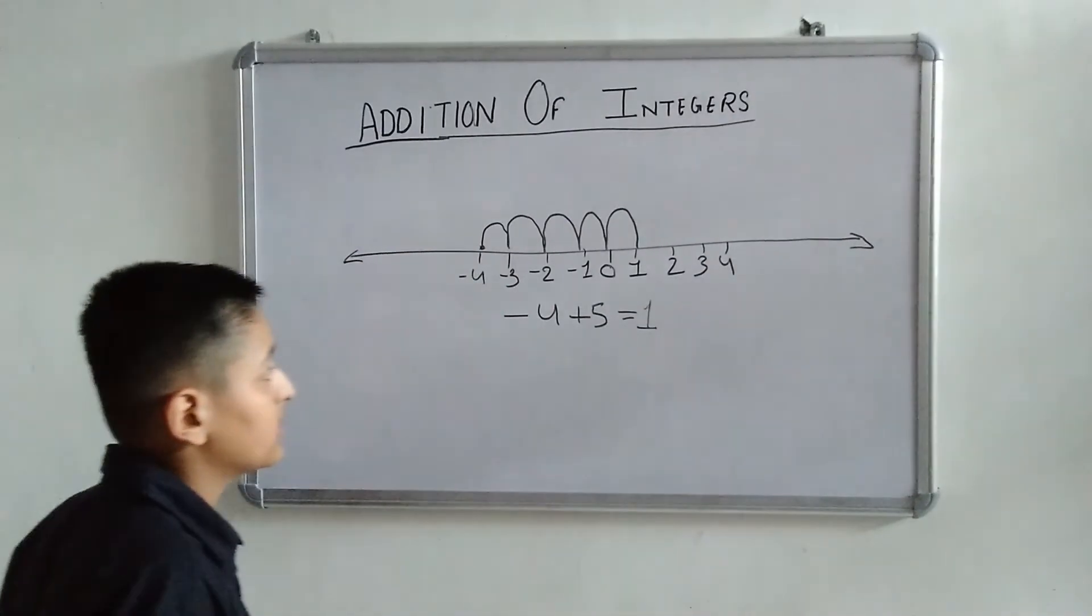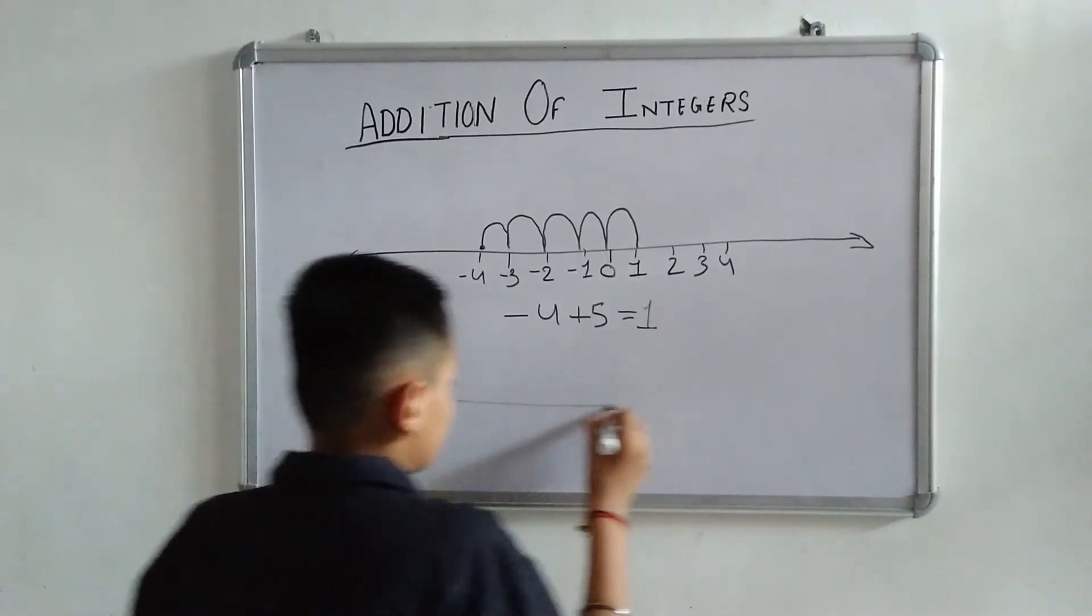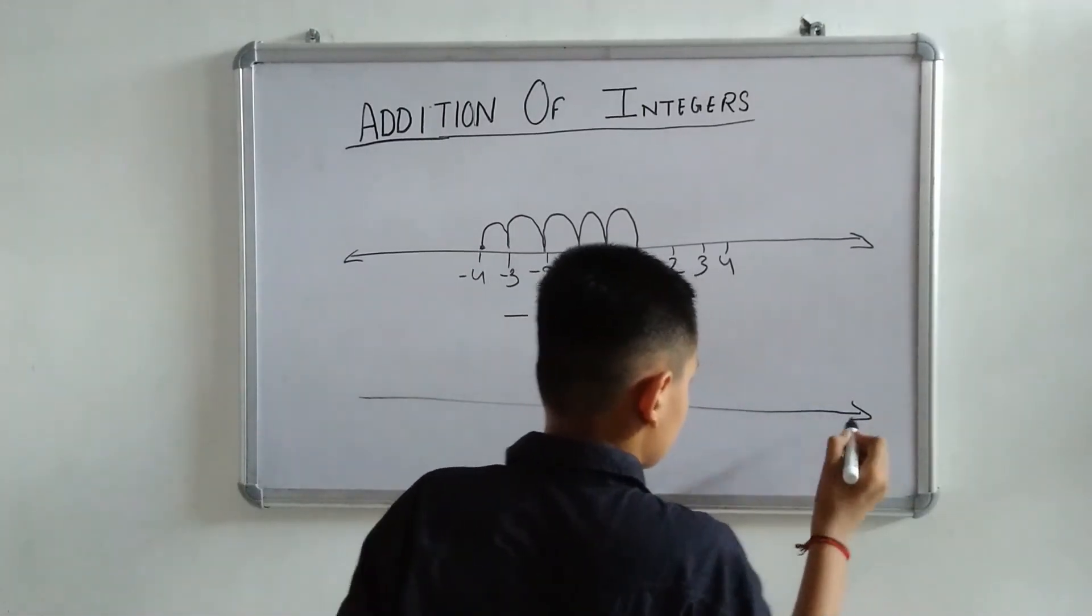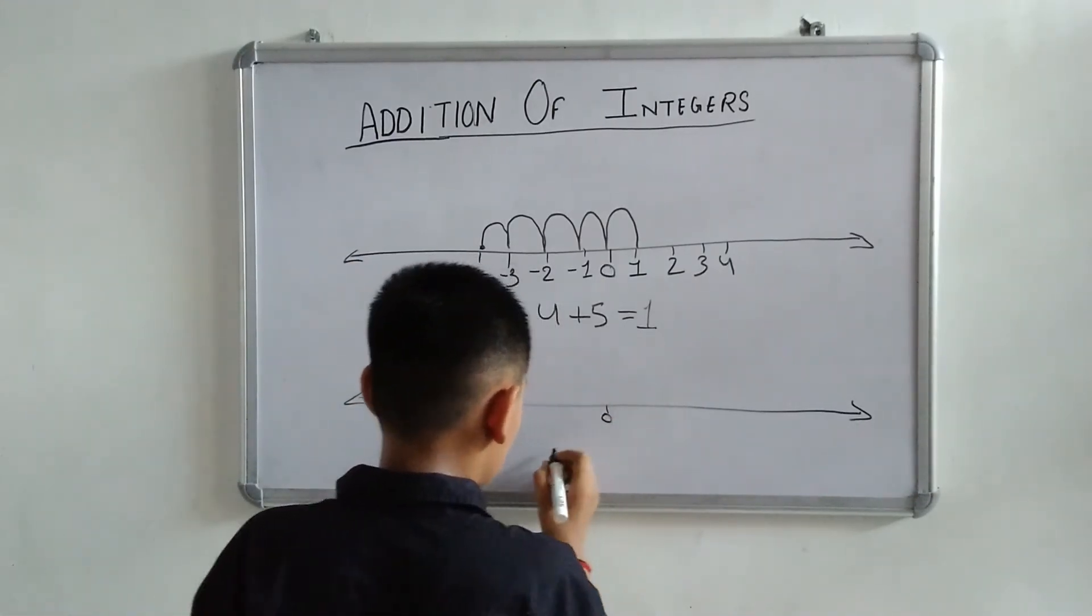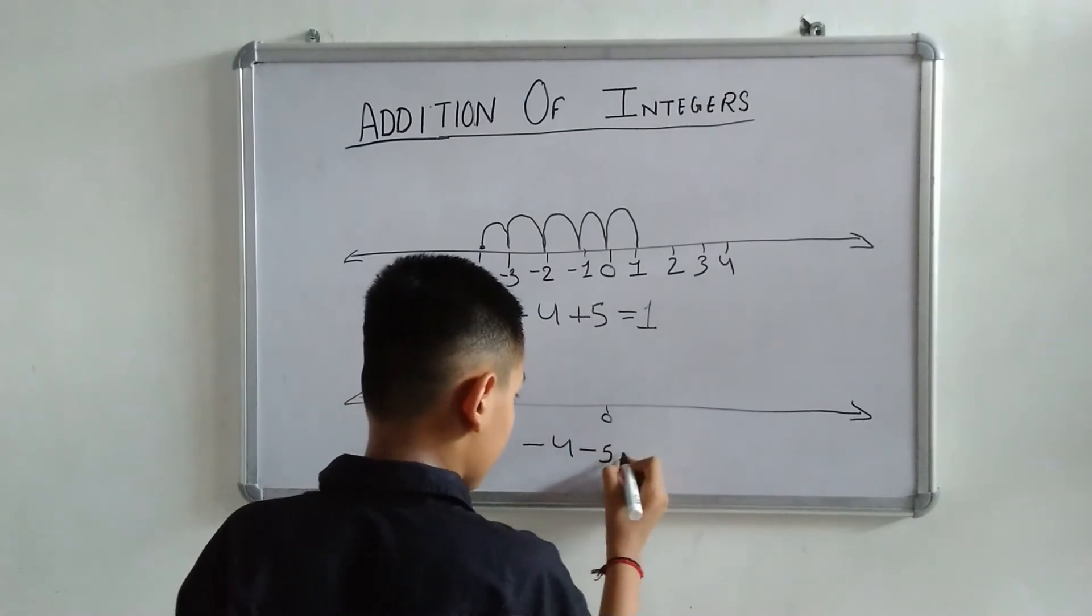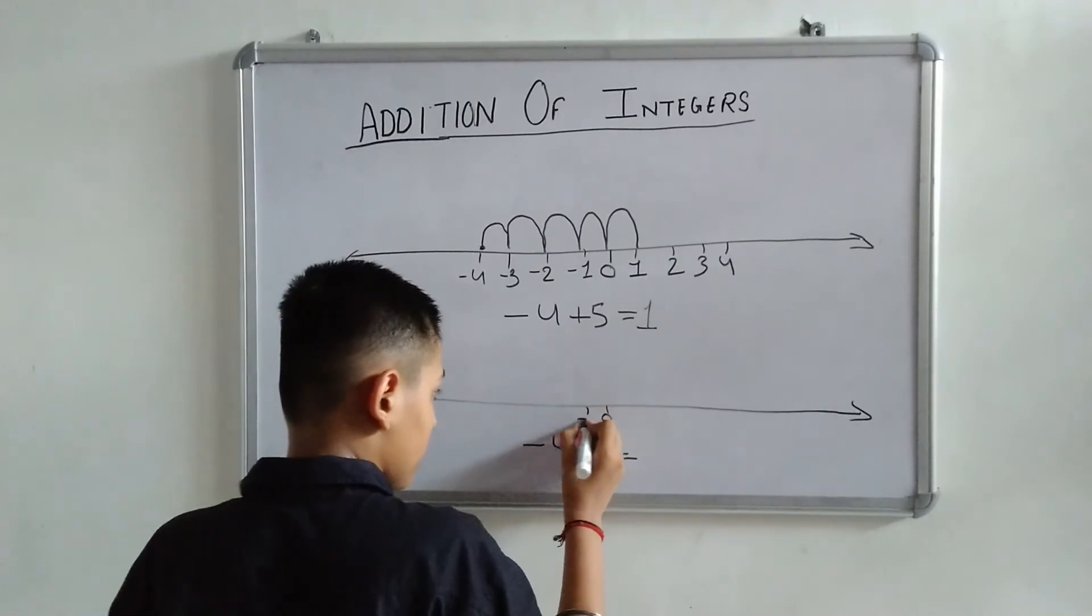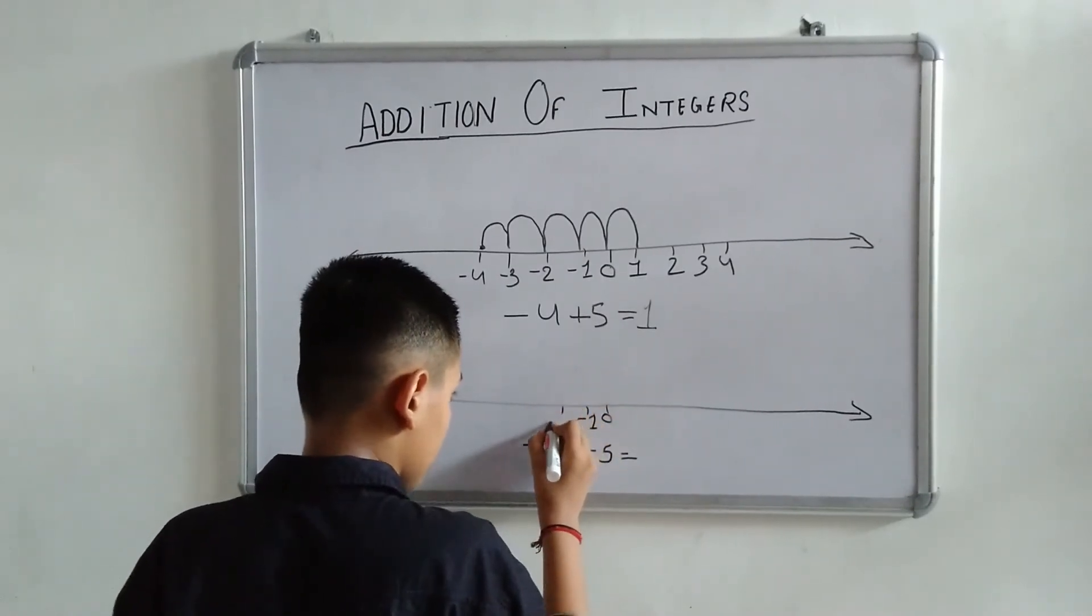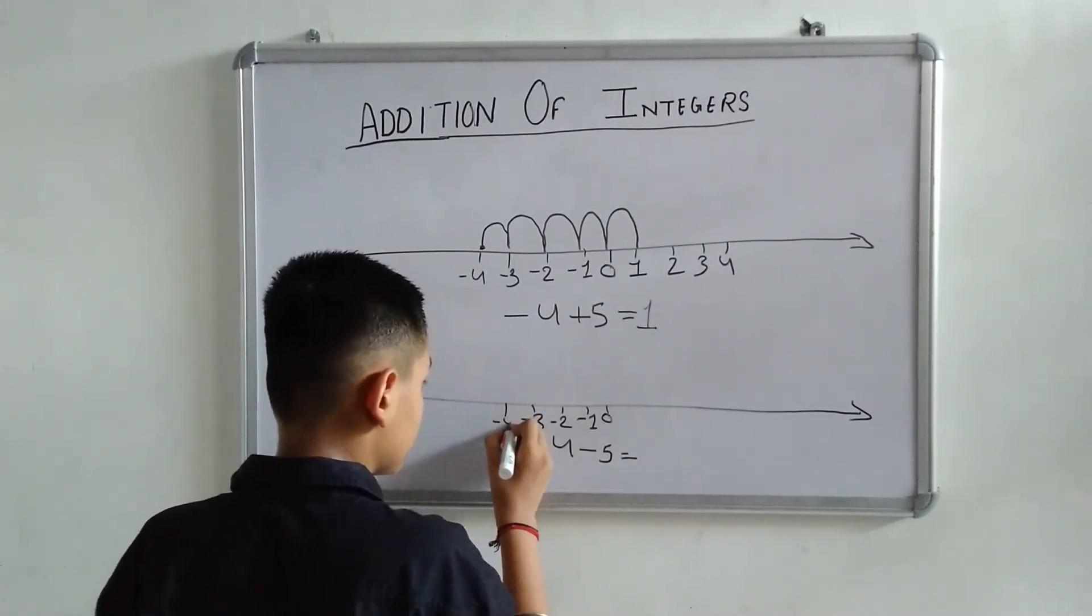Okay friends! This is very simple. Let's take another example: 0, minus 4 minus 5 equals 2. It said minus 4: minus 1, minus 2, minus 3, minus 4.